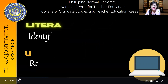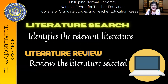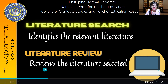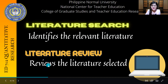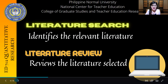A literature search identifies the relevant literature wherein we are actually looking for materials in general without having a specific topic in mind. While in literature review, we review literature selected based from what we have gathered — we try to select those materials, journals, or even research that are relevant to our specific topic in mind.